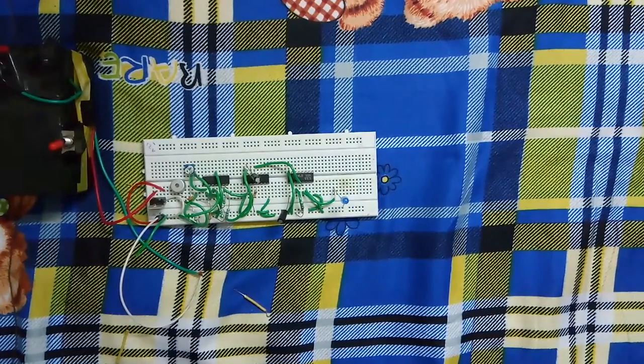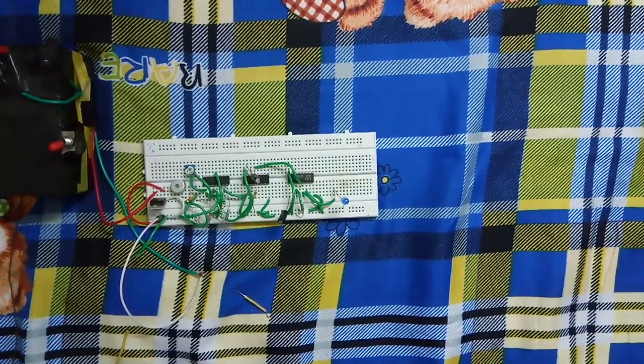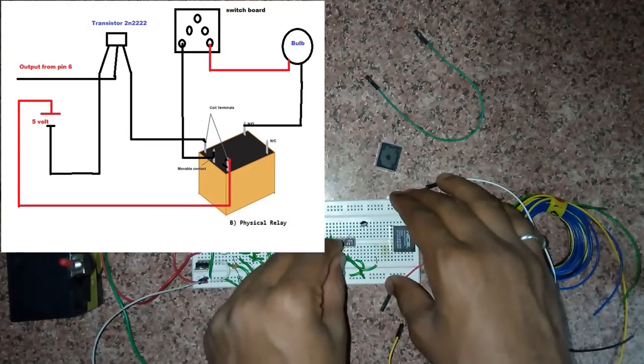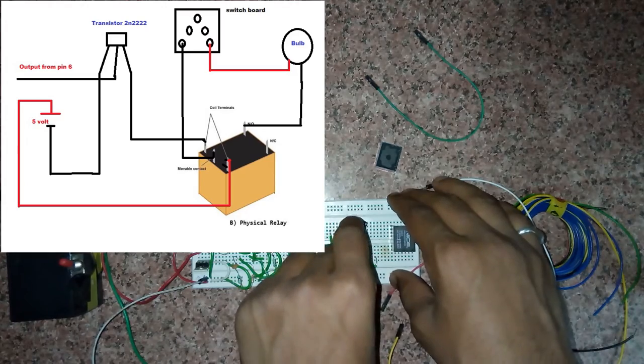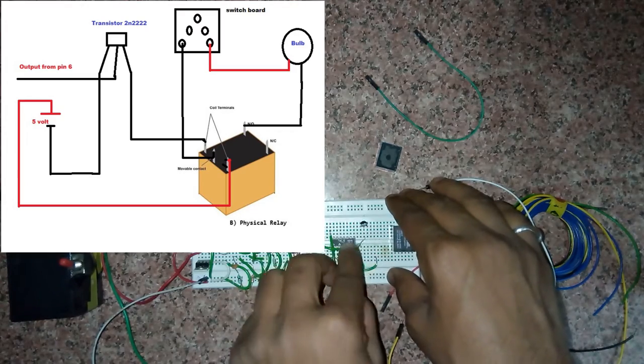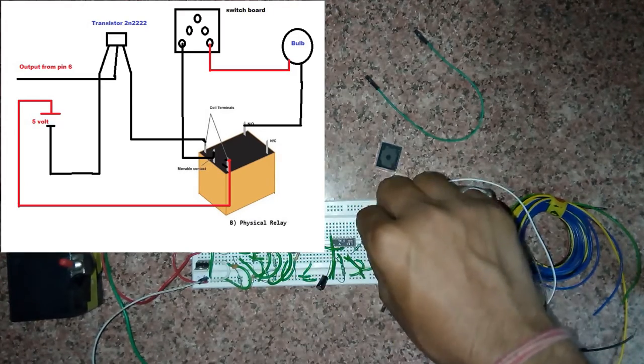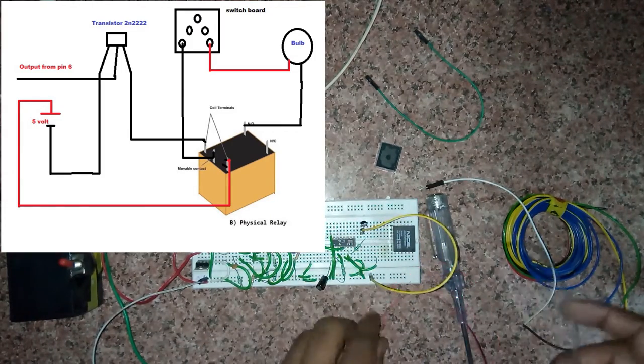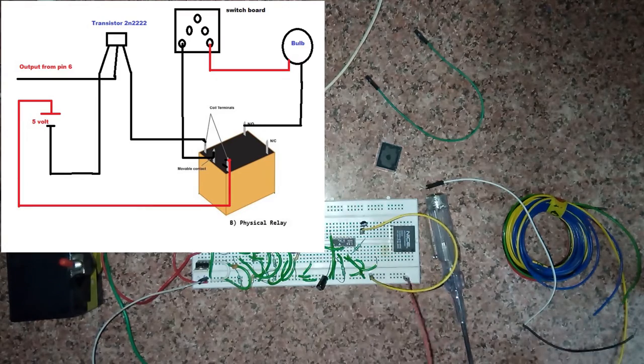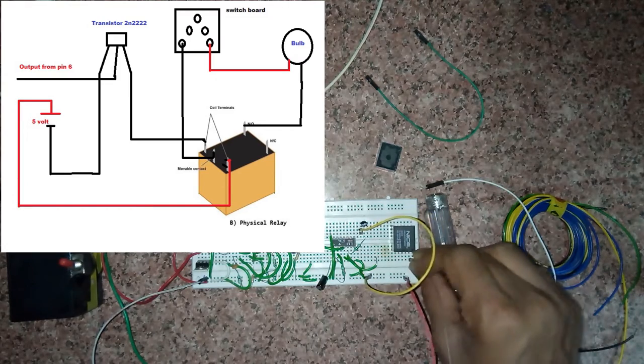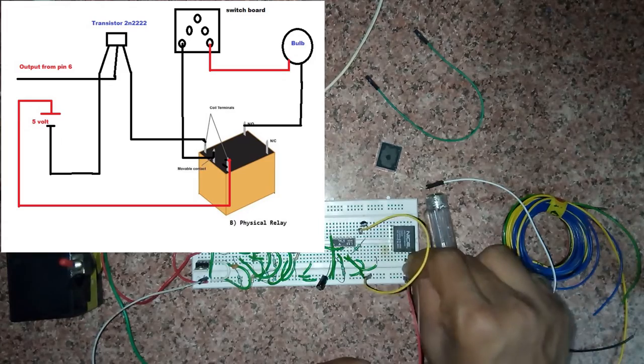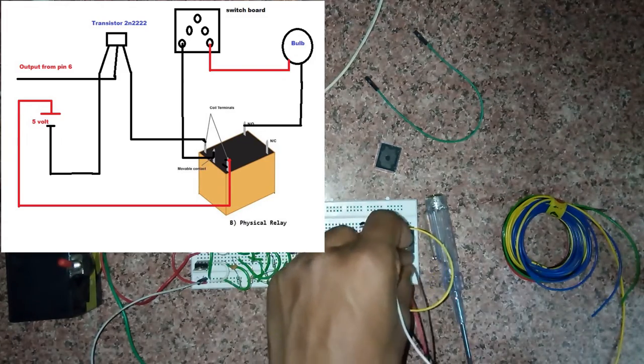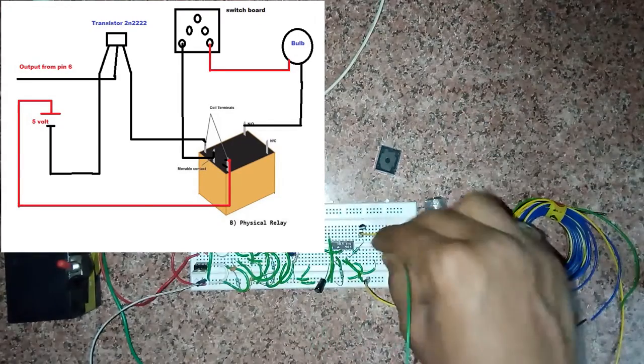The output of the 109 IC will be connected to the base of the transistor. So this is the relay circuit. The leftmost pin of the transistor, that is the emitter, will be connected to ground, and the rightmost pin will be connected to one coil terminal of the relay. The other coil terminal will be connected to VCC.